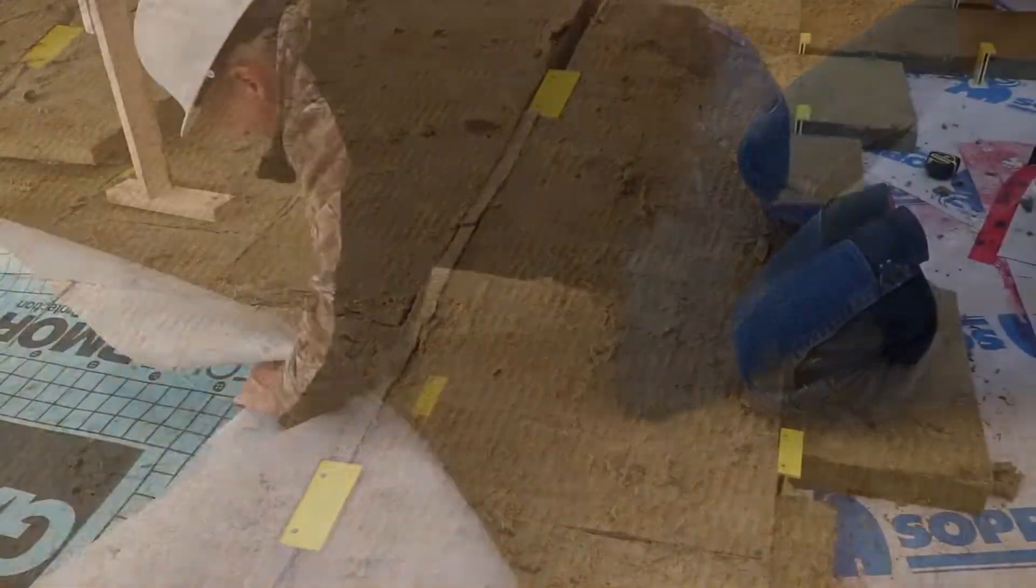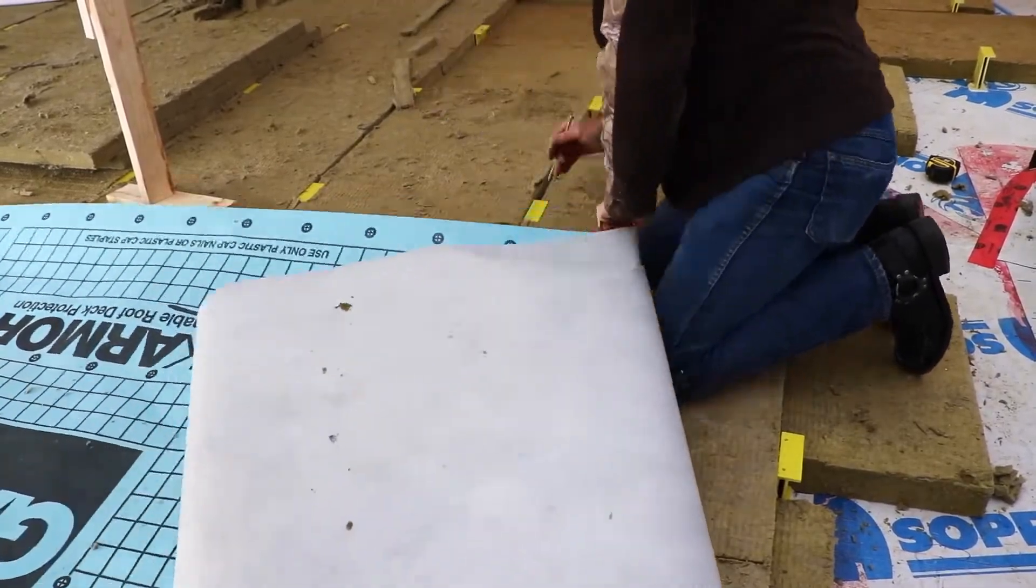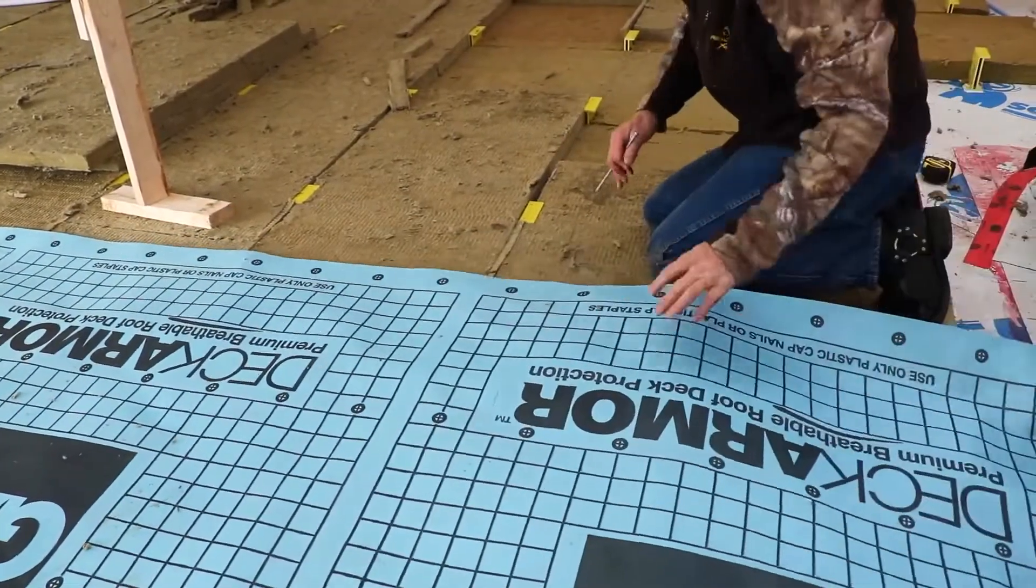Cover the two layers of insulation with a water-resistant membrane, poking holes through the membrane at Cascadia clip locations as you go.